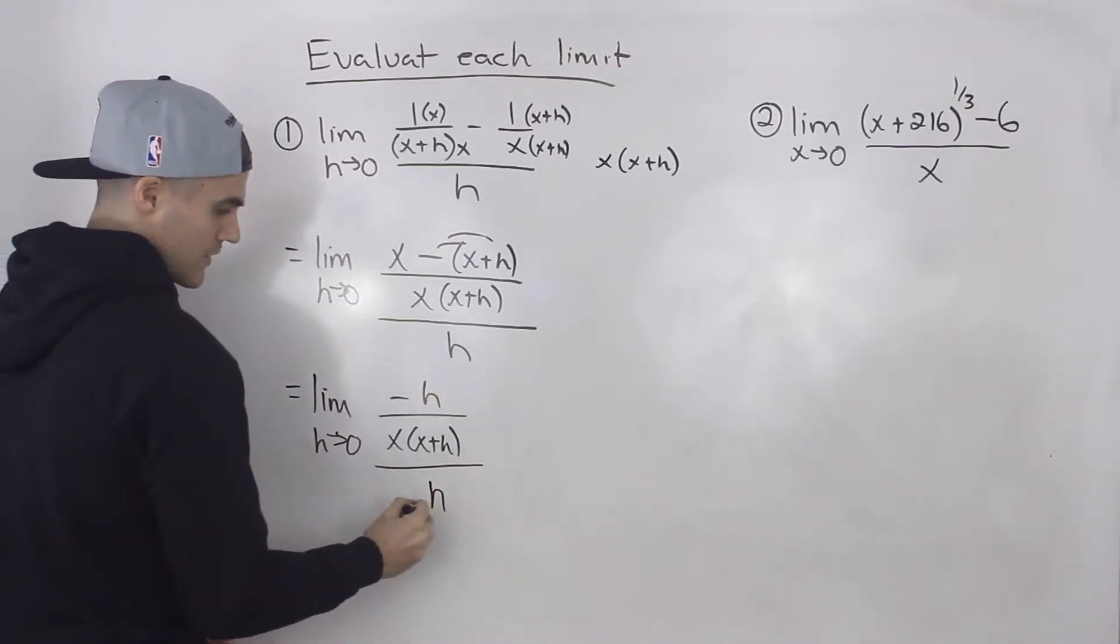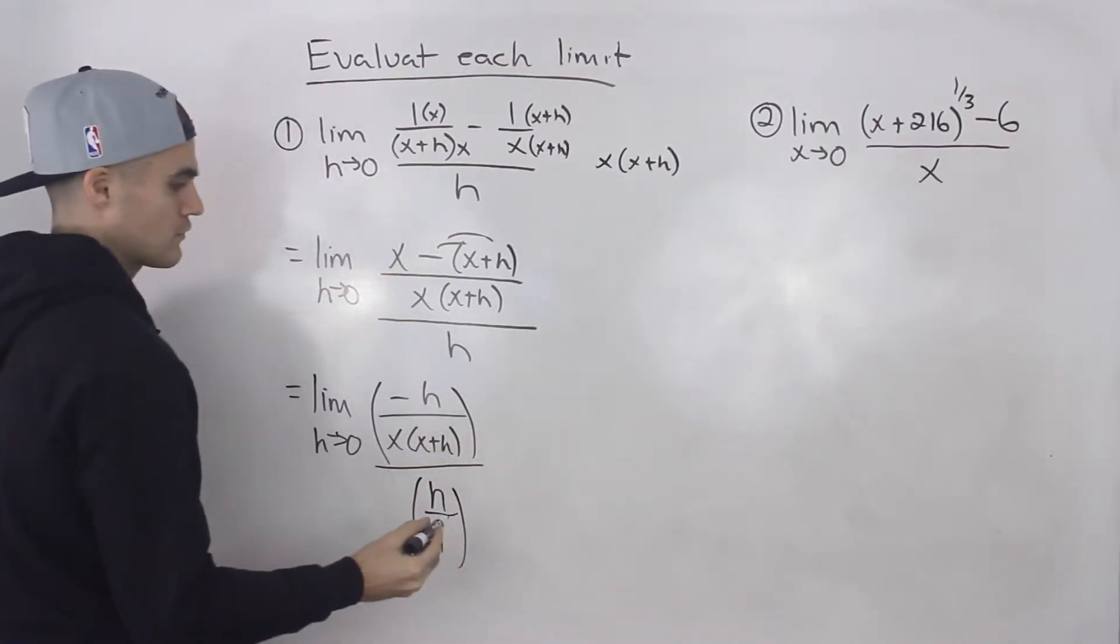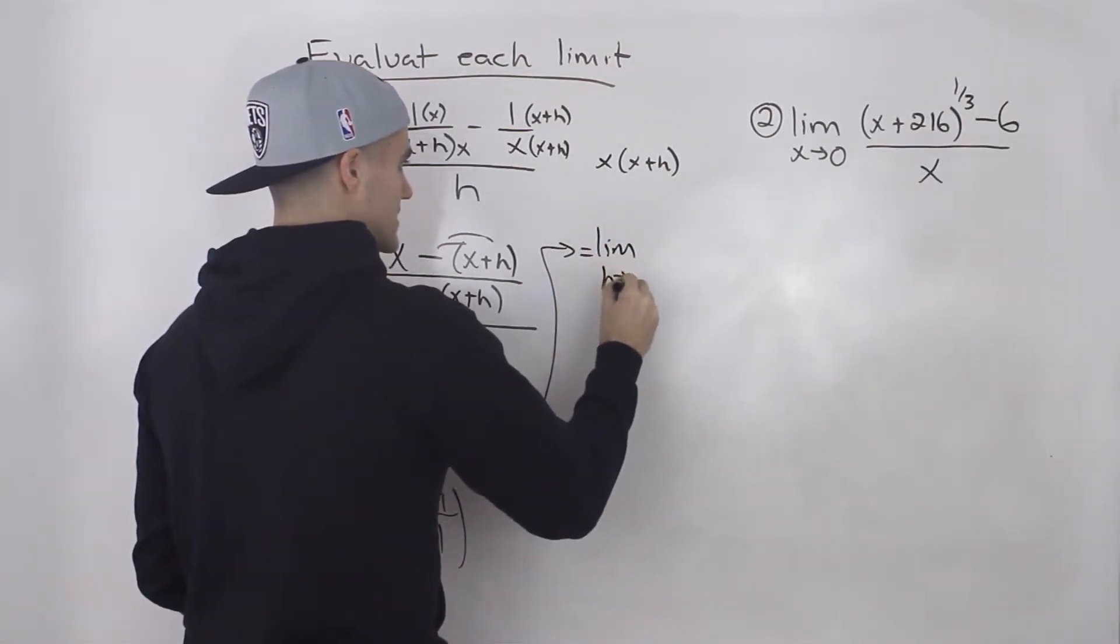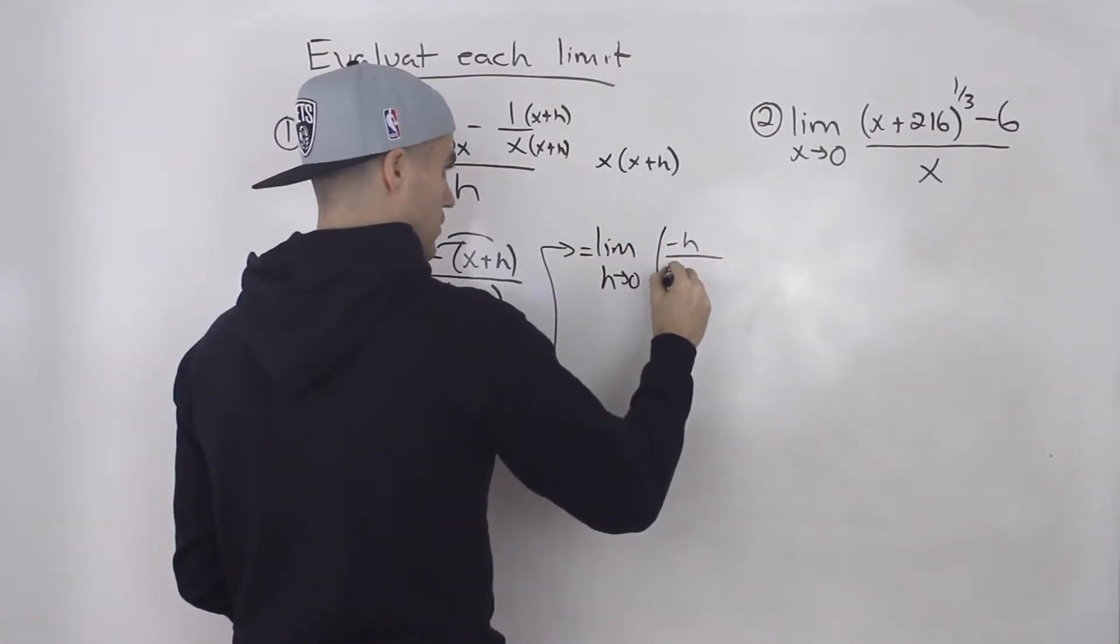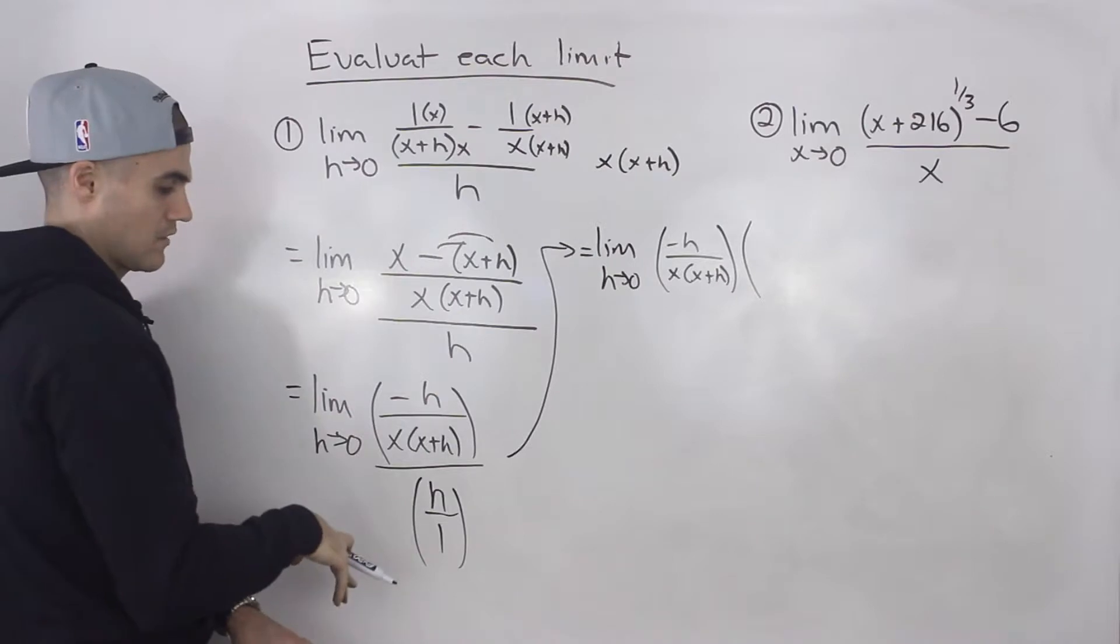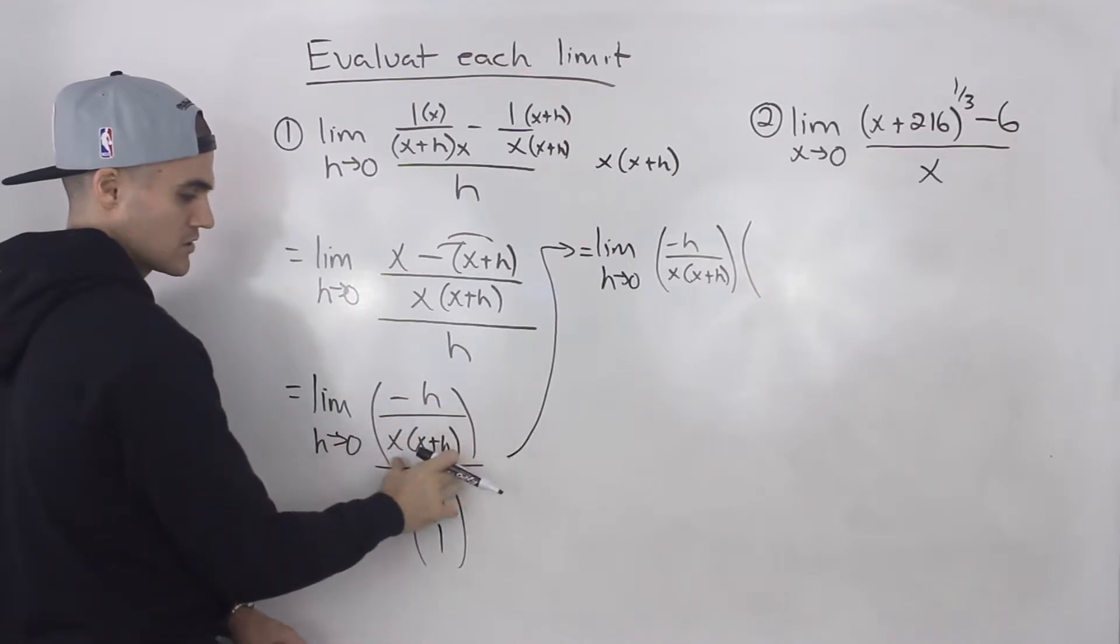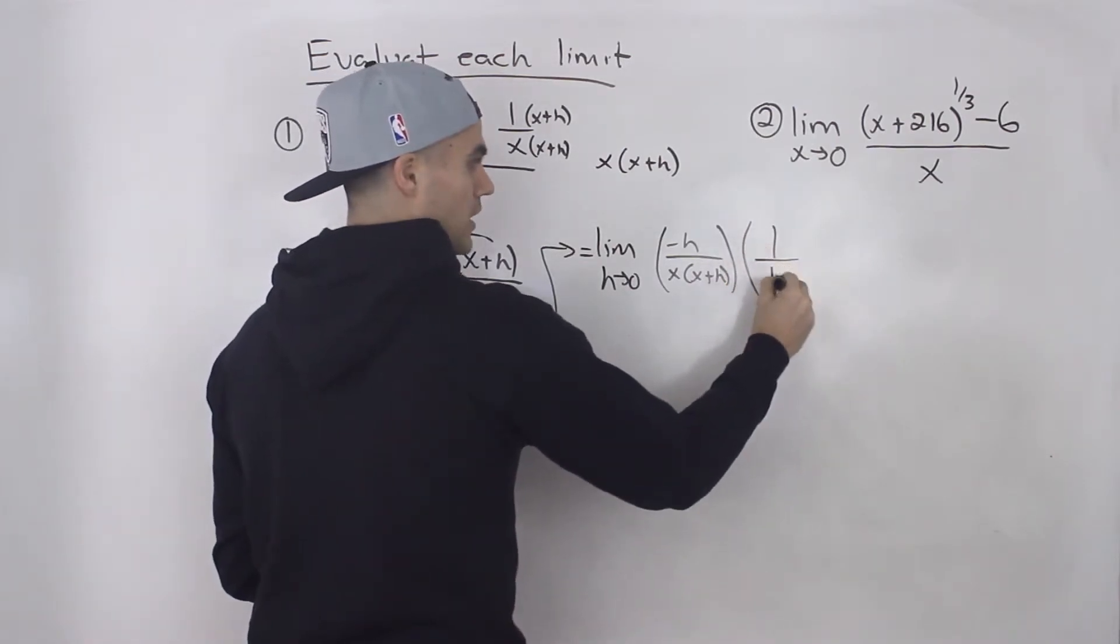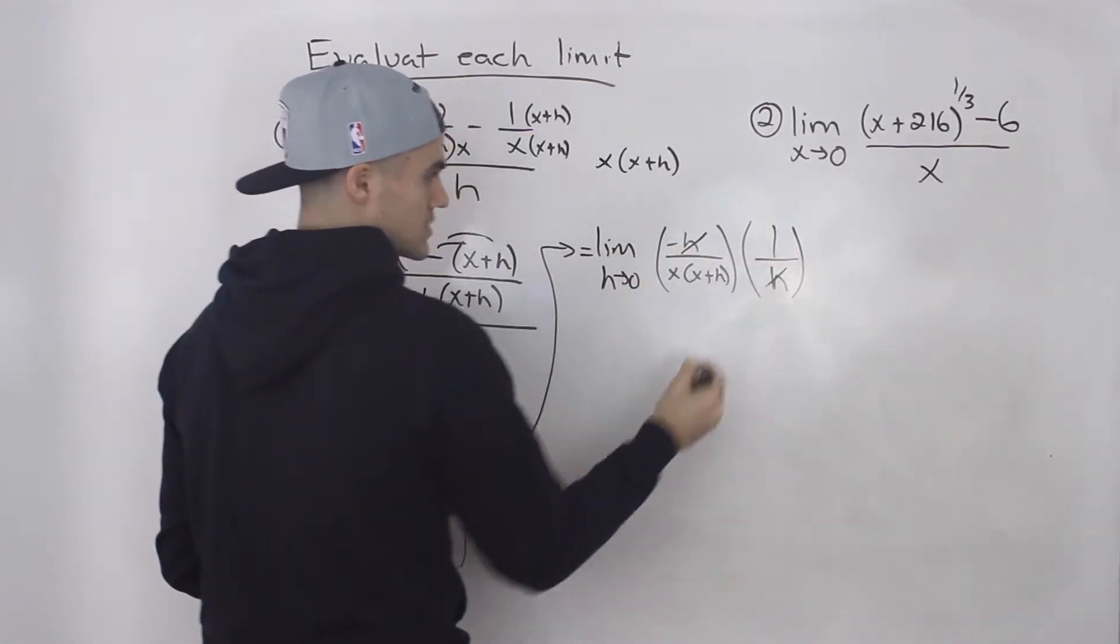So we can take this h value, put it over one, and it's like we're taking a fraction dividing it by another fraction, which is the same as taking the fraction in the numerator, so negative h over x, x plus h, and multiplying it by the reciprocal of that second fraction. A fraction divided by the second fraction is like the first fraction times the reciprocal of the second fraction. So we'd be multiplying by the reciprocal of h over one, which is just one over h. And now notice h's cancel out.